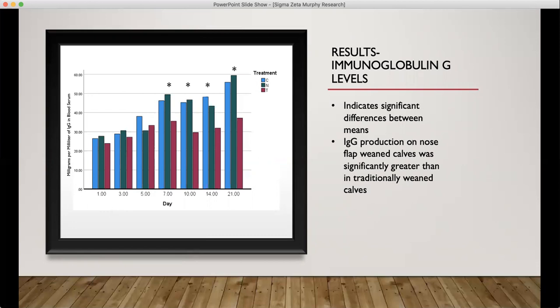In this figure, we see that about seven days after vaccination, our nose flap calves are creating a significantly higher level of IgG compared to the traditional, and this occurs throughout the rest of the study. The IgG levels for our nose flap peak on day 21, and at no time during the study were the levels of antibodies different between the control non-weaned calves and the modified nose flap weaning method calves.